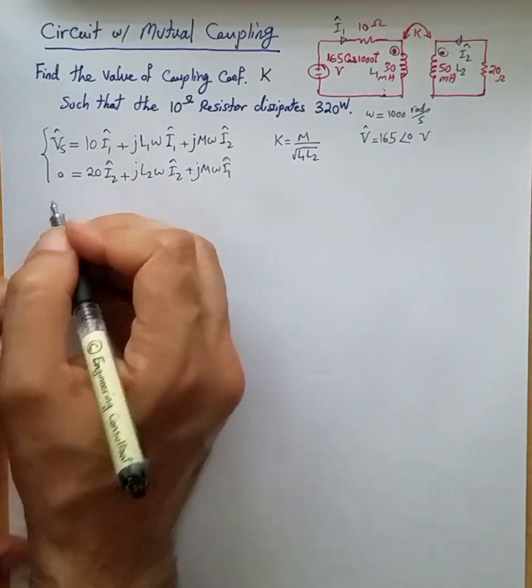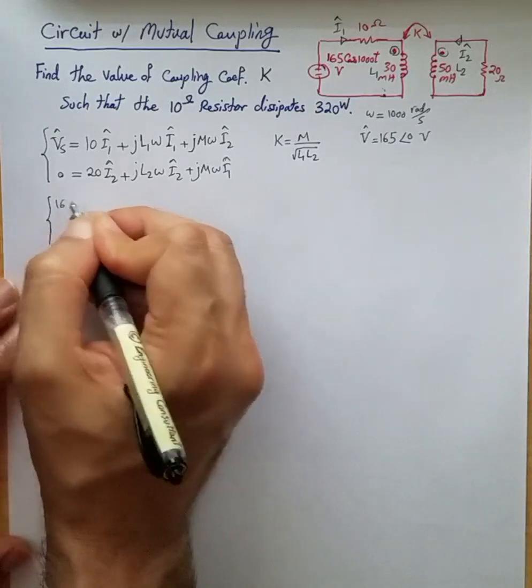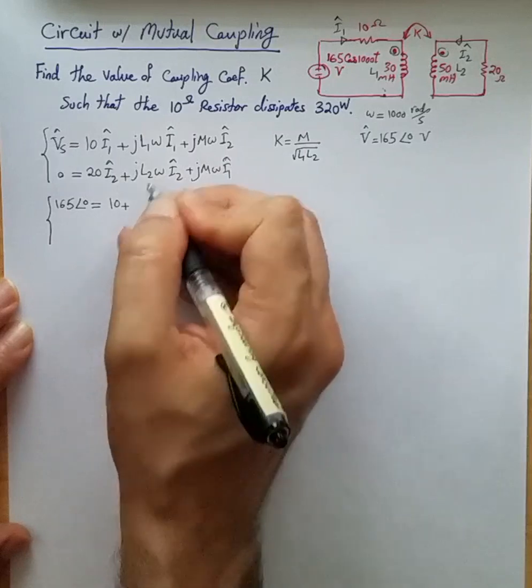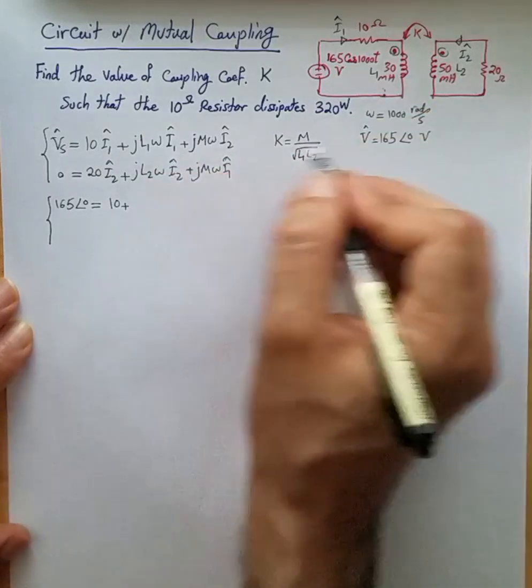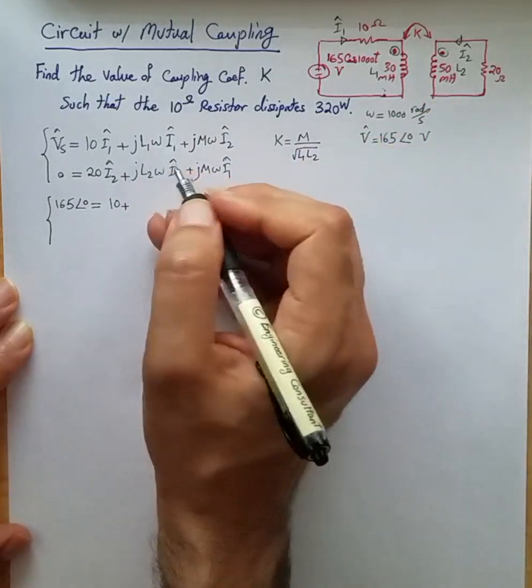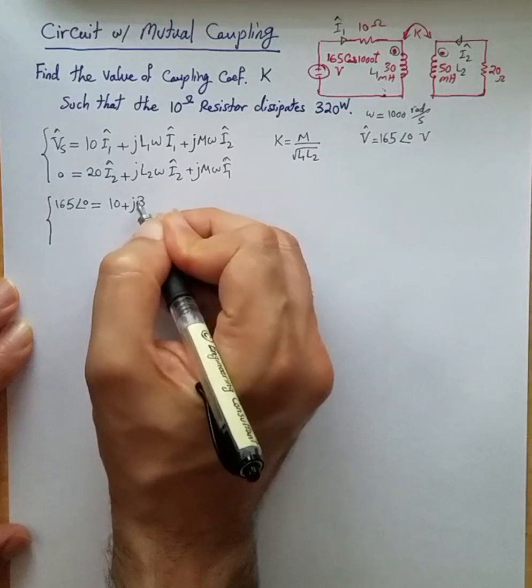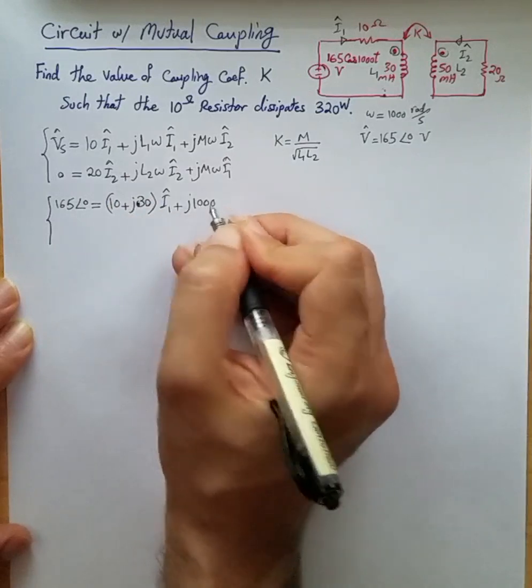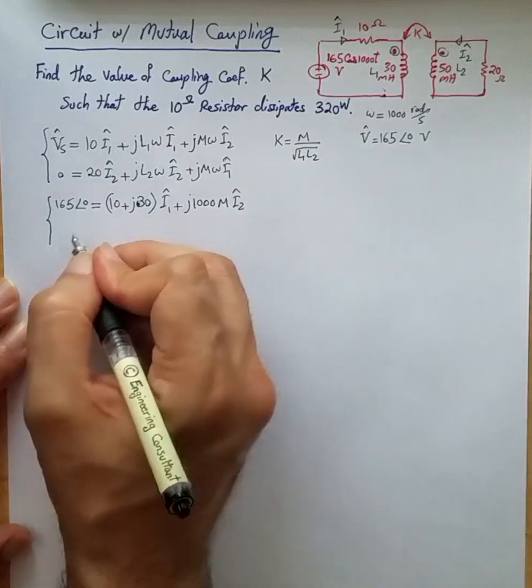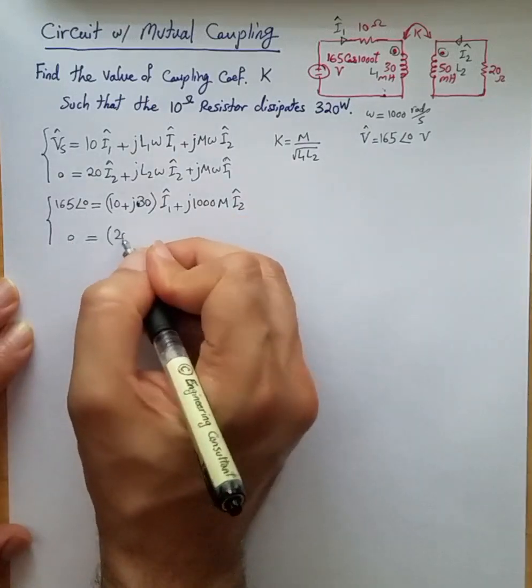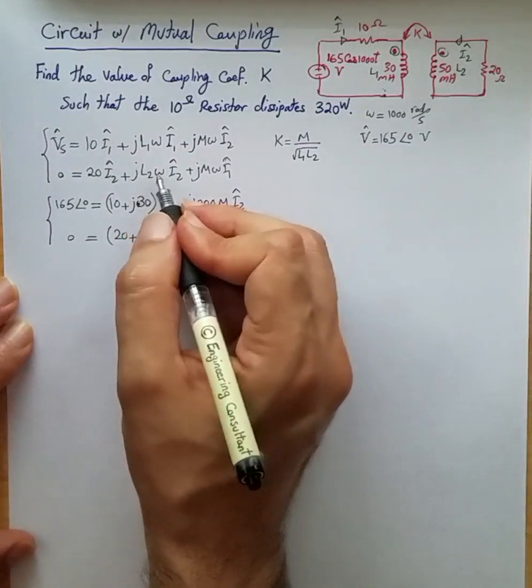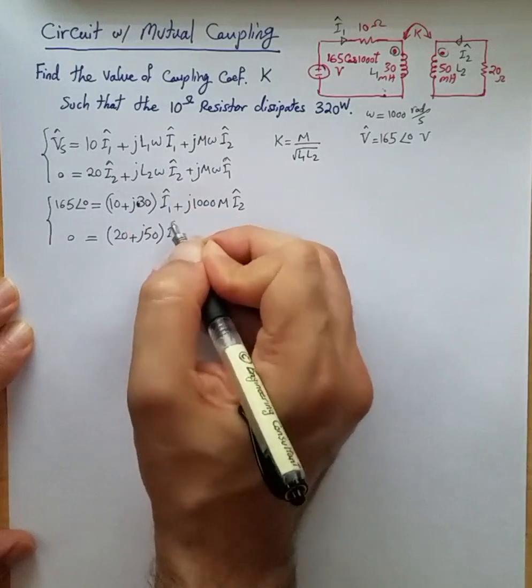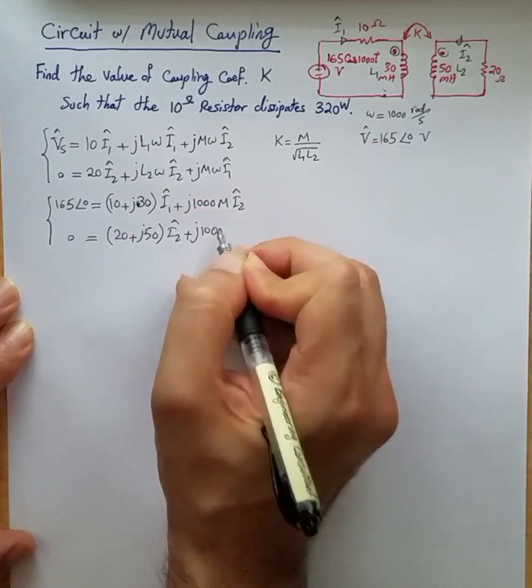Let's substitute the values. Vs is 165 phase 0 equals 10 plus L1 is 30 millihenry and omega is 1000 per second, so L1ω is just 30. So j30 times I1 plus j1000M I2, we don't know M. And 0 equals 20 plus, same idea here, jL2ω, omega is 1000, L2 is 50 millihenry, so we have j50 and this time I2 plus j1000M I1.